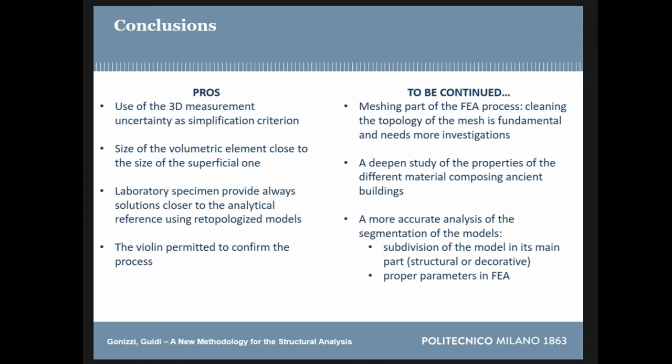In conclusion, the methodology worked, validated at least in part by laboratory tests — the steel specimen gave specifications and the violin confirmed the process. The remaining problems are in the meshing part — topology correction — and the study of properties of different materials and segmentation. Of course, you cannot use the same parameters for every part of a structure; it has structural parts and decorative parts, and this is something that has to be further studied. Thank you.